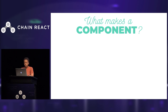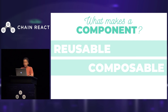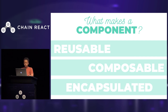So what makes a component? It needs to be reusable — it allows you to easily create new components from existing ones. It needs to be composable — you can combine it with other components to make new experiences. And it needs to be encapsulated, so like isolated markup, isolated styles, and isolated behavior. That's a textbook definition of what a component is, but after working with them for quite some time, I have come up with some other tips and tricks that we can use.